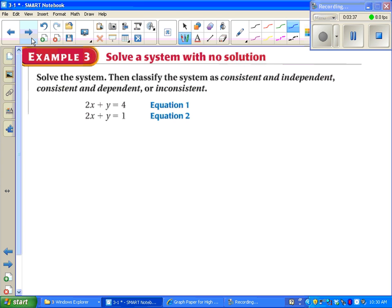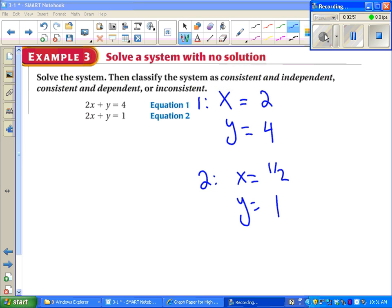Same idea. We solve the system and classify using one of our three classifications. So again, we'll find our x and y intercepts for equation one and equation two. Unlike the last example, we can't tell just by looking at it necessarily. They're definitely not the same line.